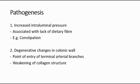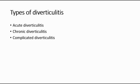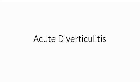The risk factors of diverticular disease include dietary fiber — specifically a diet lacking in fiber — and also a genetic factor. There are three main types of diverticulitis which I will explain one by one in this video. The first one is acute diverticulitis.